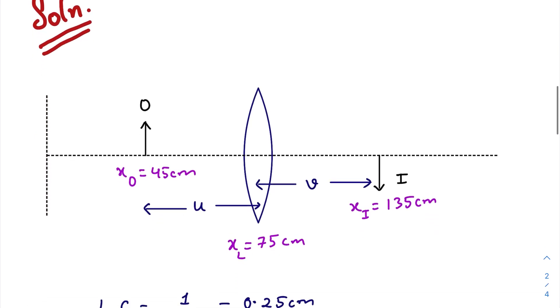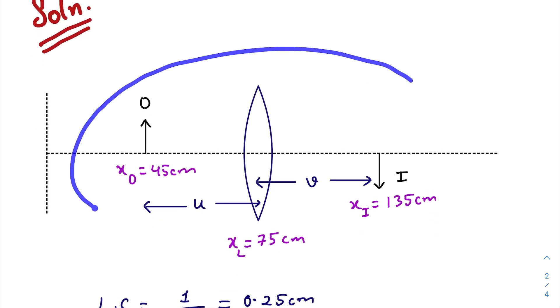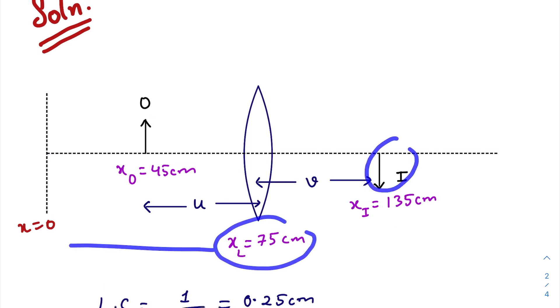If we consider this as our experimental setup, here if we consider as x equals to zero, our object pin is at x equals to 45 centimeter, lens is at x equals to 75, and the image is at, inverted image is at 135 centimeter.